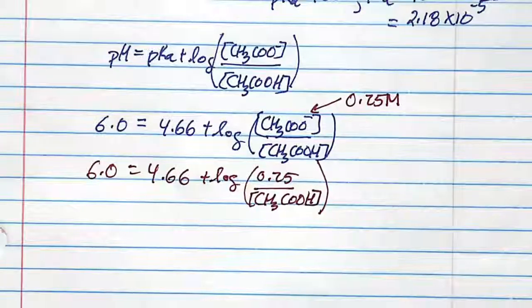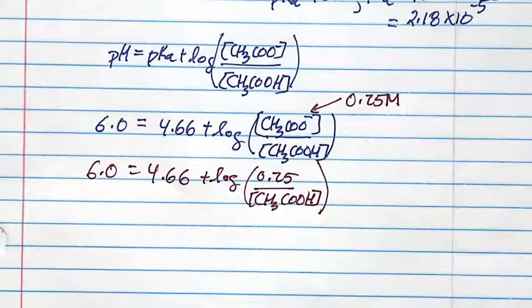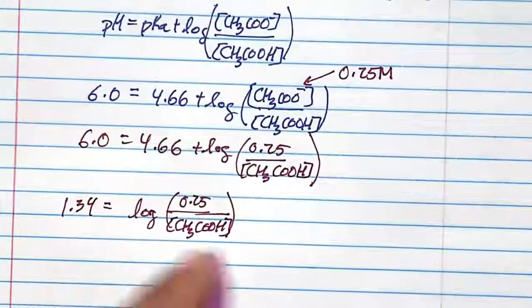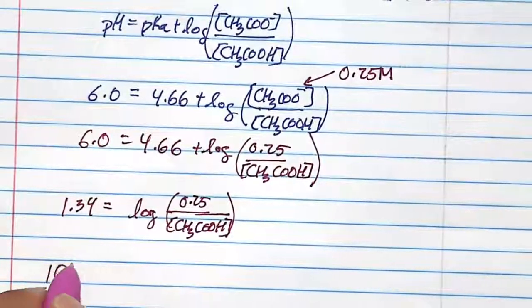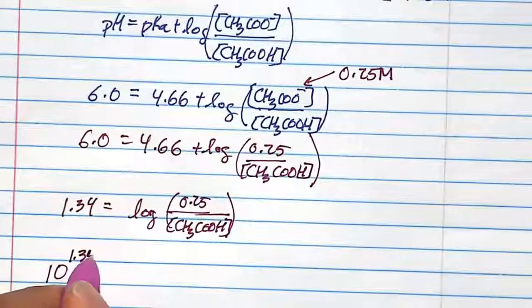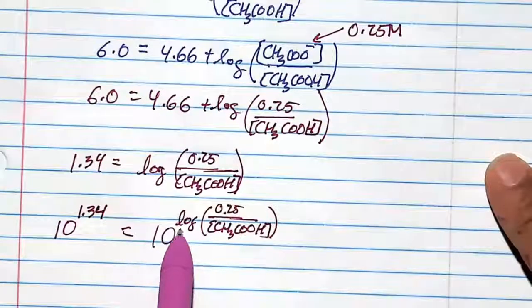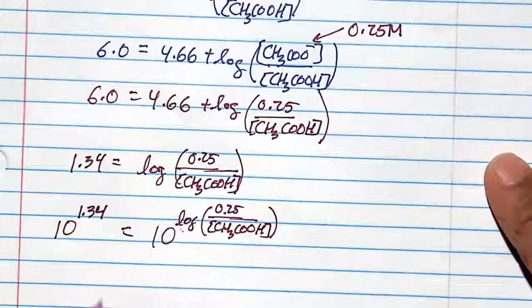6 minus 4.66 is the first thing we'll do to pop the log out. I'm going to do the inverse log. That's going to be 10 to the power of 1.34 equals 10 to the power of log of this, which pops this out.